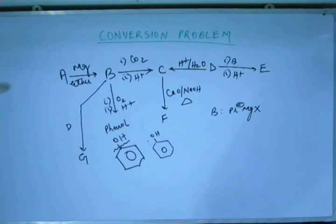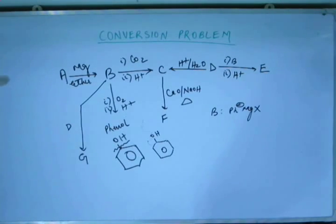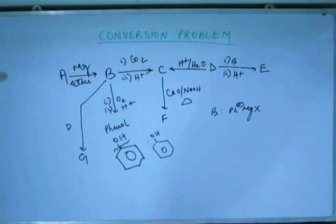You have to look around. A step before, a step ahead, two steps before, two steps ahead to give you the idea of what that substrate should be. So from this step A to B, I got the idea it must be Grignard reagent and then I zeroed down to B. Now B must be Ph minus MgX.